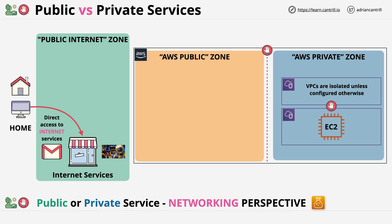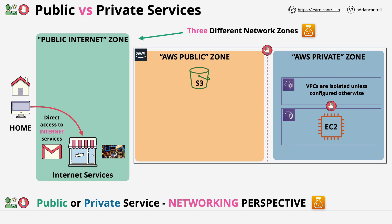Services with public endpoints, such as S3, operate in the AWS public zone. To summarise, we have three different network zones: the public internet, the AWS private zone which is where VPCs run from, and the AWS public zone which sits in the middle — and this is where AWS public services operate from.